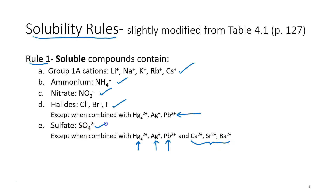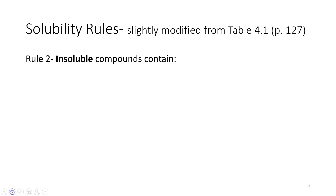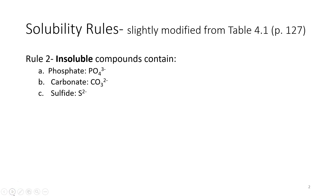If you see sulfate combined with any of these cations, it would be insoluble. Rule 2 tells us what insoluble compounds contain: phosphate, carbonate, and sulfide. So if you see a compound and it contains any of these anions, it's insoluble.